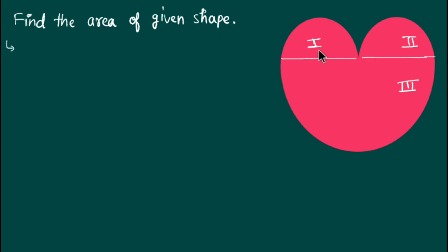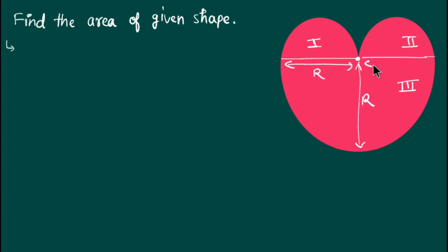If you examine carefully, you can easily see the first part, second part, and third part — these are semicircles. Suppose this is the center of the bigger part, the third part, and we denote the radius of the third part as capital R. The radius of the bigger part R is the diameter of the smaller ones — the first and second parts. So the diameter of the first part and second part is capital R.